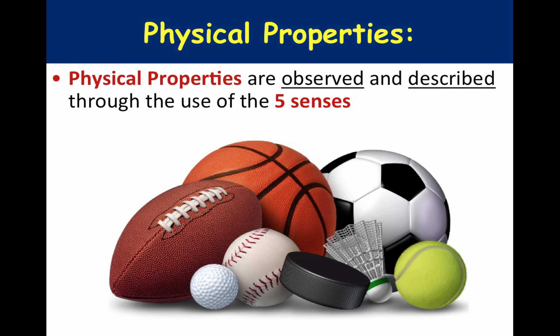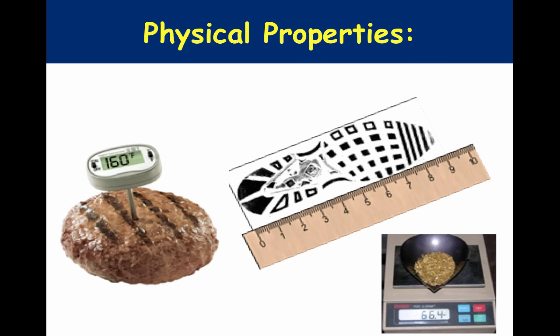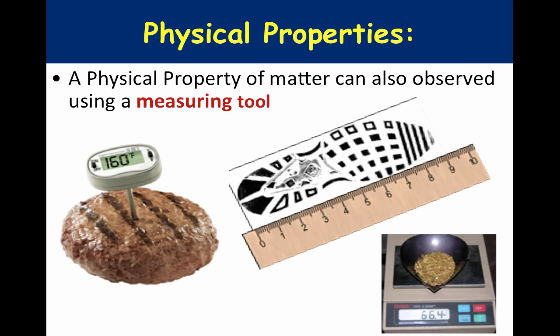Physical properties can also be observed through the use of a measuring tool. The internal temperature of the hamburger is about 160 degrees, the length of the shoe is about nine inches, the mass of the gold is about 66.4 grams. In all three of these cases, our observations are aided through the use of some scientific measuring tool.